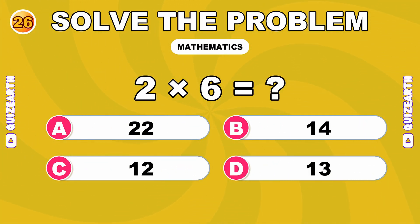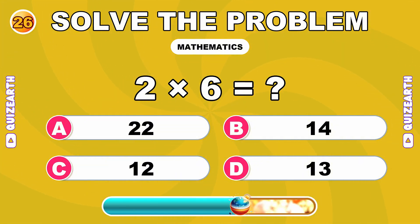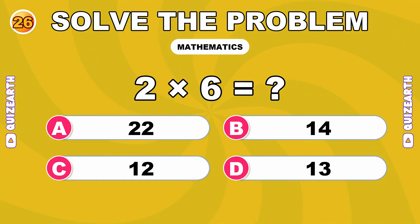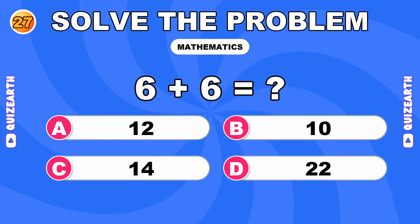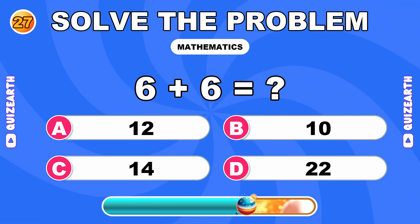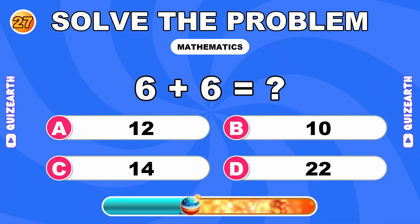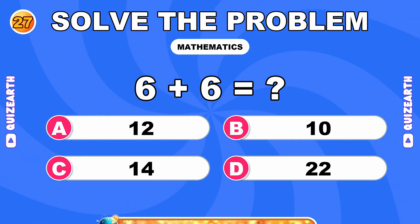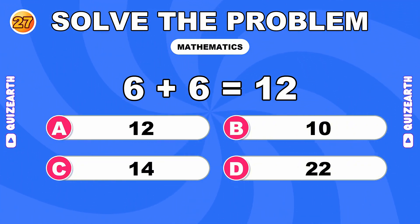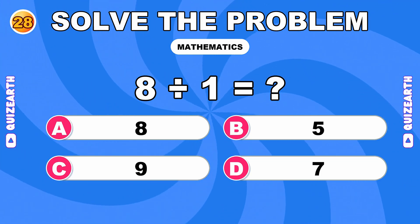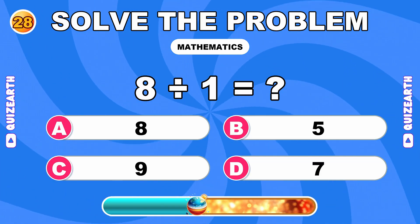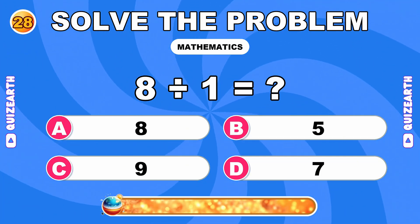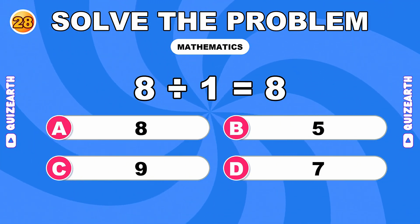How much is 2 times 6? Unbelievable. The answer is 12. What do you get when you add 6 and 6? You're a natural. The answer is 12. What is 8 divided by 1? Outstanding work. The answer is 8.